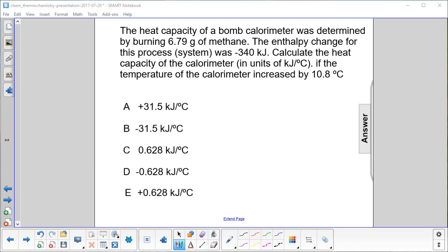The heat capacity of a bomb calorimeter was determined by burning 6.79 grams of methane. The enthalpy change for the system was negative 340 kilojoules. Calculate the heat capacity of the calorimeter if the temperature increased by 10.8 degrees Celsius.